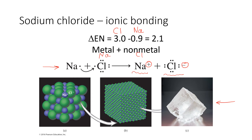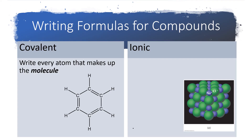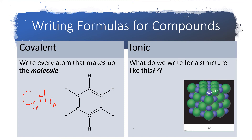There are no molecules — it does not stop with just a single sodium and a chloride. When we write the formula for a covalent compound, we write every atom that makes up the molecule. The molecule shown here is benzene. Counting the carbons, there are six, so we write a subscript of 6 on the carbon. Counting the hydrogens, there are six as well. So we write the formula for benzene as C₆H₆. But for sodium chloride, if I looked at a representation with about 64 ions, that would be about 32 sodiums and 32 chlorides — but sodium chloride is simply written as NaCl.